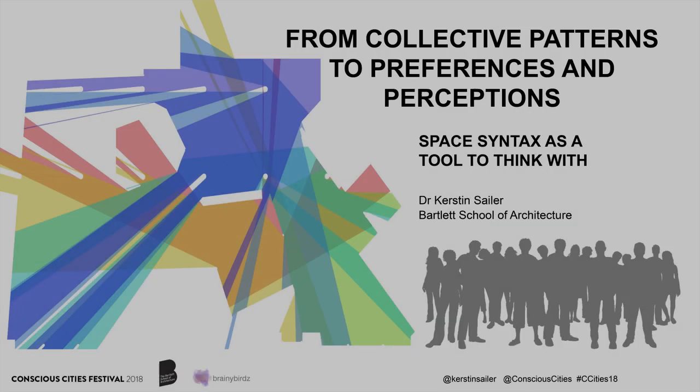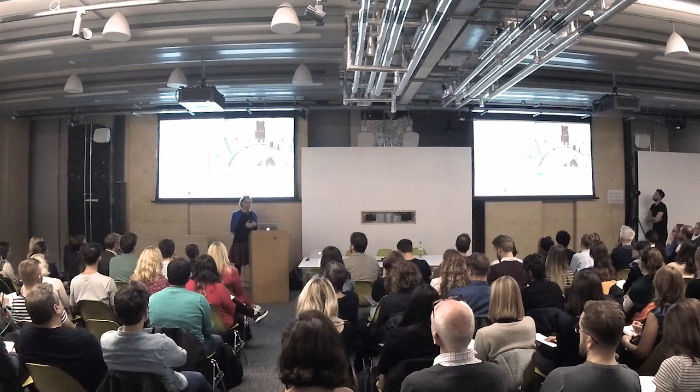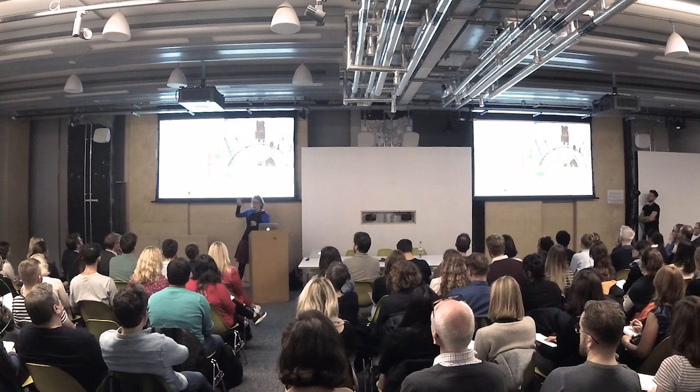I want to talk today about space syntax and about the perspective of someone who lives and researches in this building. This is home territory for me — my office is three floors up here. In my research, I'm looking at buildings and building layouts, the decisions that architects take, what kind of responses we get from human users, and how people use different kinds of spaces. I'm Kirsten Saylor, a reader here in the Bartlett School of Architecture.